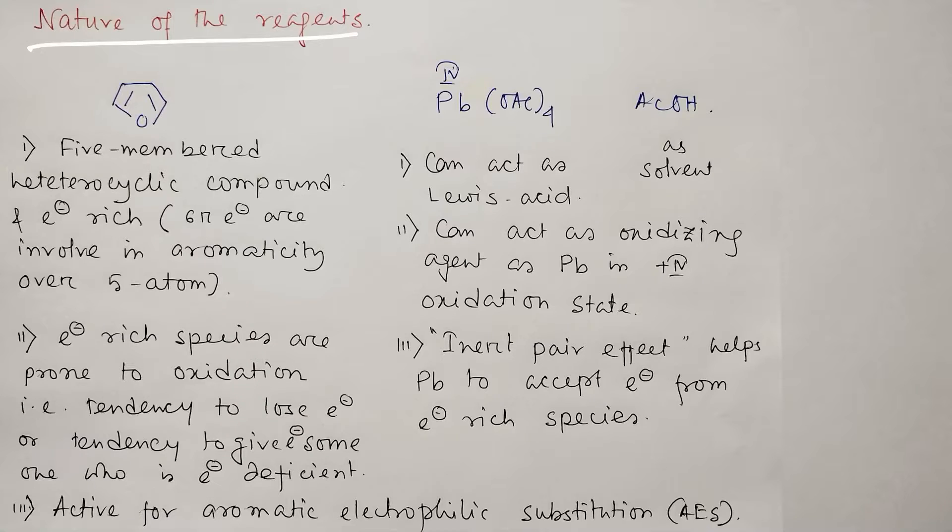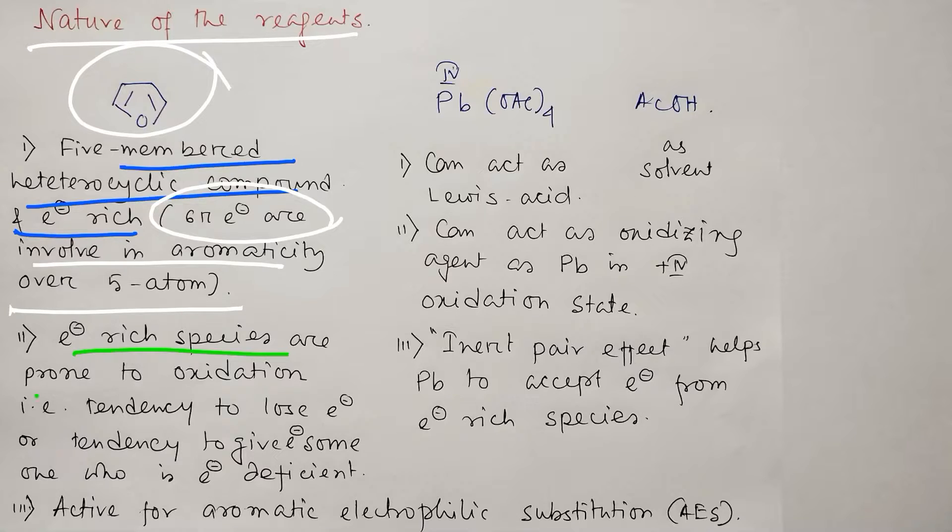So first look at the five-membered ring means furan. Furan is a five-membered heterocyclic compound and electron rich. Actually they are called pi-excess nucleus. Why? Because in this case, six pi electrons are distributed over five atoms because of the aromaticity. That's why they are pi-excess in nature. And since they are electron rich, they are prone to oxidation because a substrate, if it has an excess electron, it is capable to donate and if it donates electron to someone, it gets oxidized and something will be reduced.